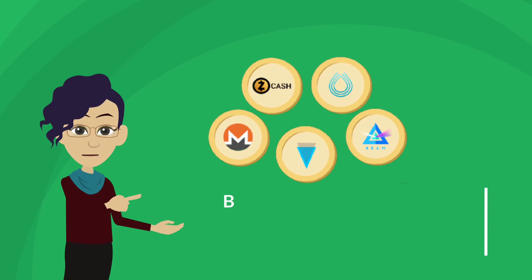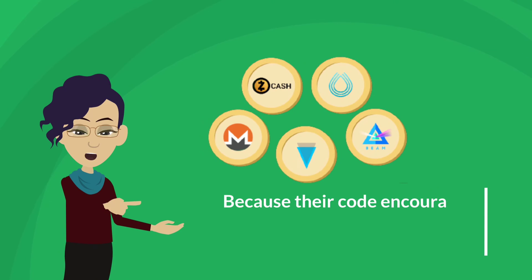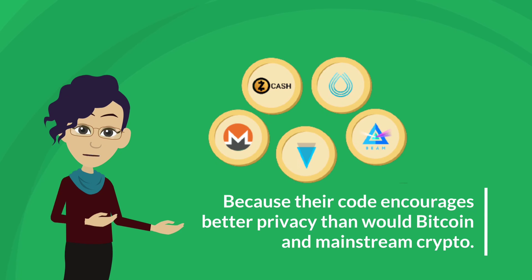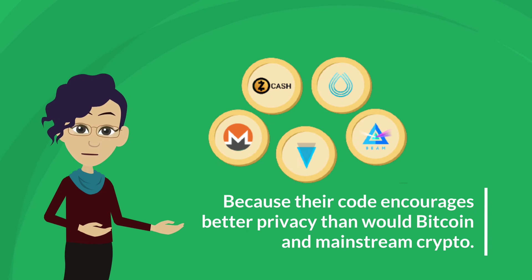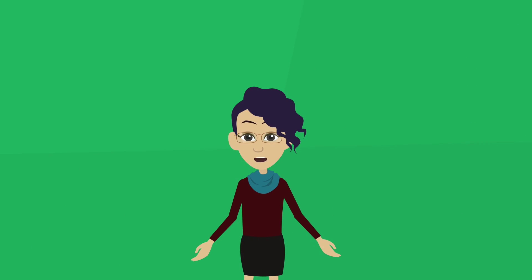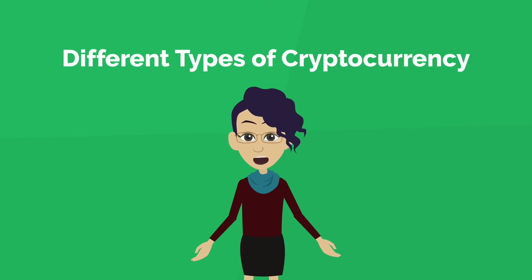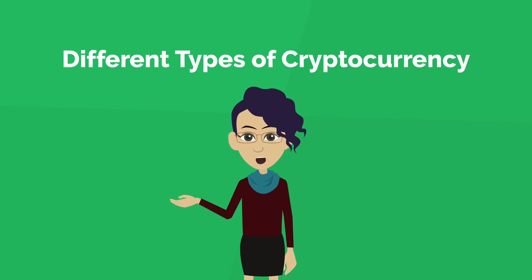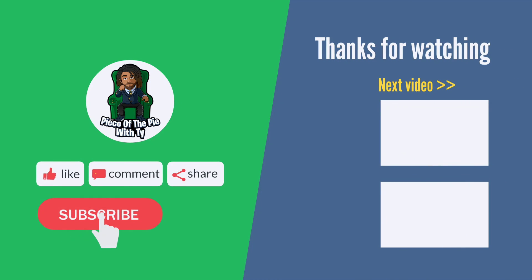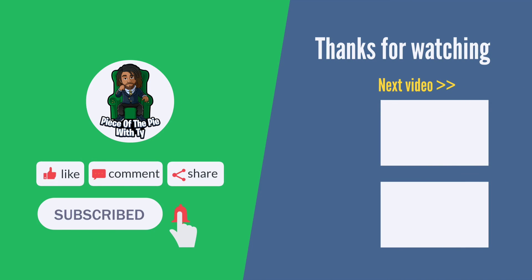Nine: privacy tokens. As the name suggests, these are cryptocurrencies used for privacy applications, because their code encourages better privacy than Bitcoin and mainstream crypto. I hope this video helped with understanding the different types of cryptocurrency. Subscribe for more content like this — thanks for watching.